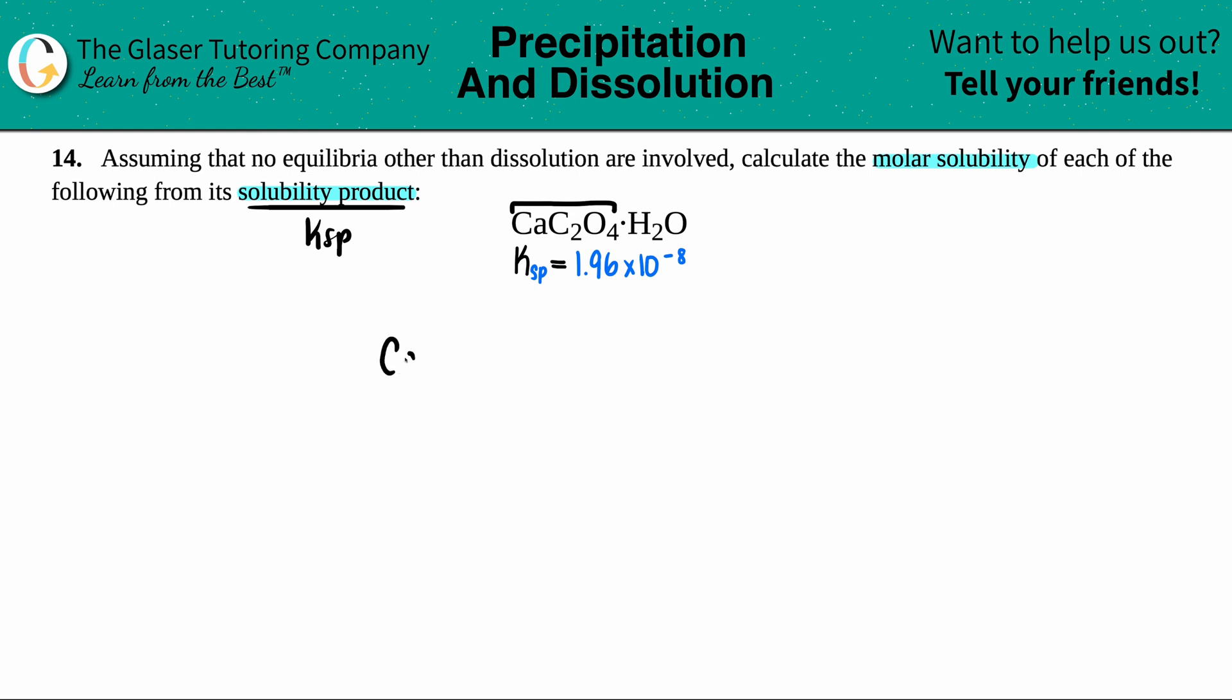So we have CaC2O4, and that's going to start as a solid. This is going to come to equilibrium. So I need to use double arrows. And now I just need my two ions.